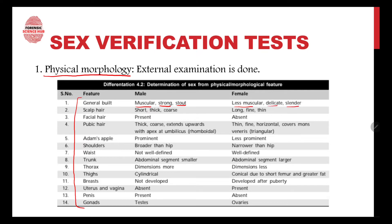For scalp hair, males have short, thick, and coarse hair whereas females have long, fine, thin hair. Facial hair is present in males but absent in females. Pubic hair in males is thick, coarse, and extends upward with the apex at the umbilicus, whereas in females it is thin, fine, and horizontal, covering the mons veneris. The Adam's apple is prominent in males and less prominent in females.